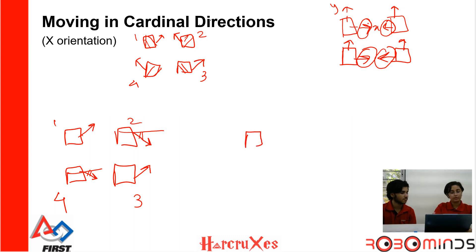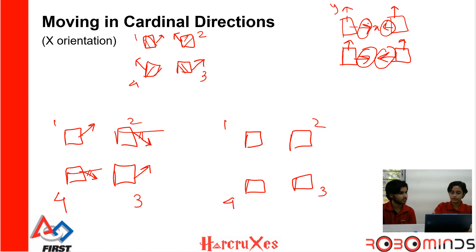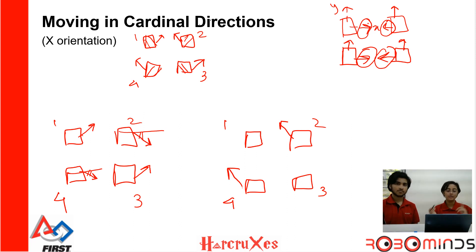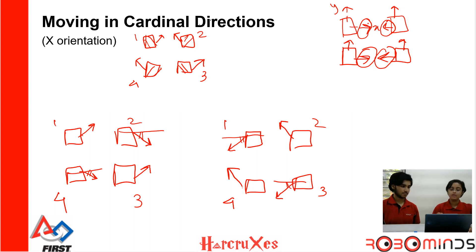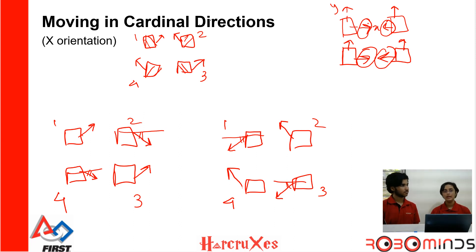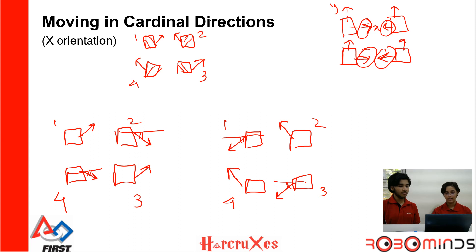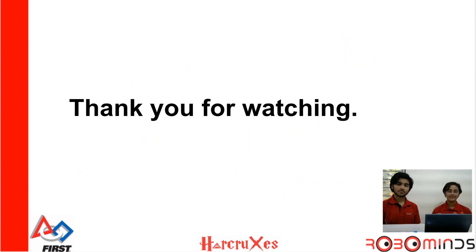For leftward movement, the same logic applies but reversed. Wheels 2 and 4 already point left, so set them positive. Wheels 1 and 3 need to be reversed, so set them to negative power. By manipulating these vector orientations, you can also move diagonally — at 30 degrees, 60 degrees, or any angle you want. We hope you can use this understanding to manipulate your Mecanum drive vectors to achieve motion in any direction.